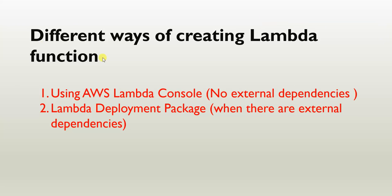There are two ways of creating a Lambda function. When you don't have any external dependencies, you can directly create a Lambda function using the AWS console. But if you have any external dependencies — like Pandas, NumPy, or any external packages — you need to create a Lambda deployment package, add all your dependencies into it, zip it, and upload that zip folder into the Lambda console. We'll cover that second way in the next video. In this video, we'll see how to create a basic Lambda function without any external dependencies.